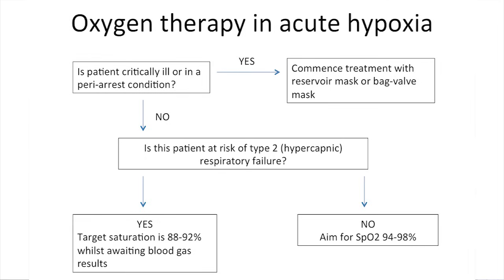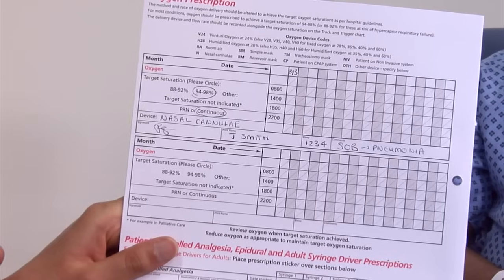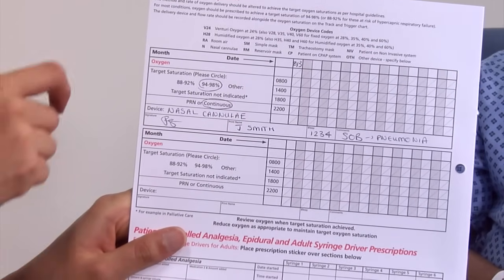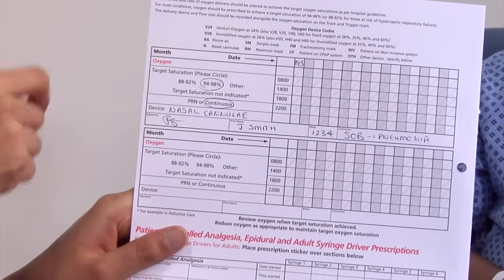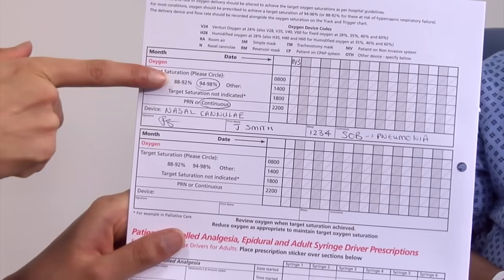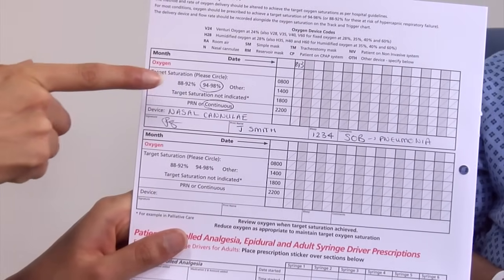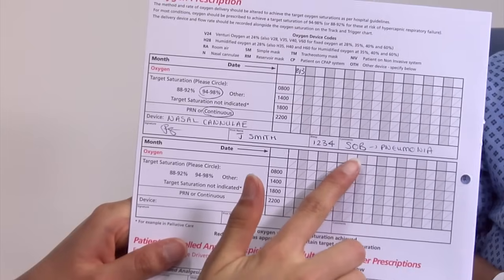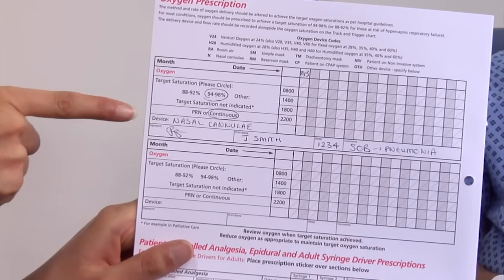Oxygen is a drug and may be harmful — it must be prescribed. In emergency situations, it can be written up afterwards. Looking at a drug chart, you need to write up the drug name, the target saturation, the flow rate, the indication, and the device used.